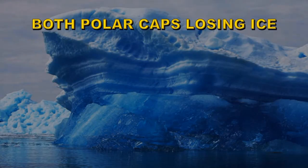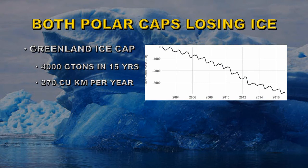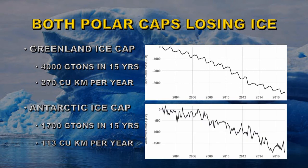The NASA GRACE mission, using gravity attraction, measures the amount of ice in the two ice caps, and both are losing ice. The Greenland ice cap is losing about 4,000 gigatons in the last 15 years, which amounts to 270 cubic kilometers of ice per year. In the Antarctic there is lesser loss — about 1,700 gigatons in the last 15 years, which amounts to 113 cubic kilometers of ice per year. So anyone that's telling you that the ice caps are growing is talking nonsense.